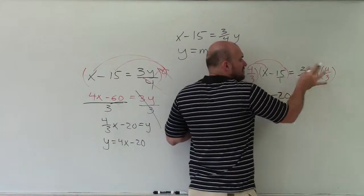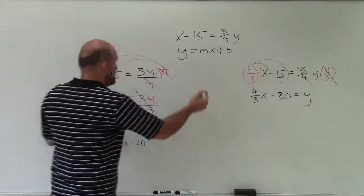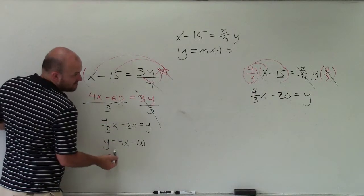Obviously, any time you take a number multiplied by its reciprocal, that goes to 1. And what you notice, ladies and gentlemen, is you have the exact same answer as I had here, which I just rewrote as y equals four-thirds x minus 20.